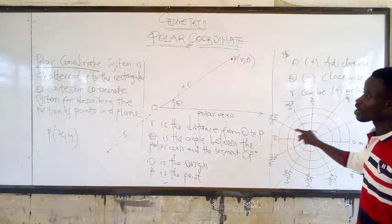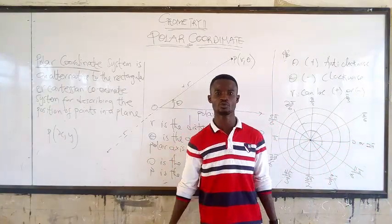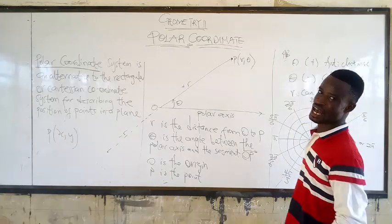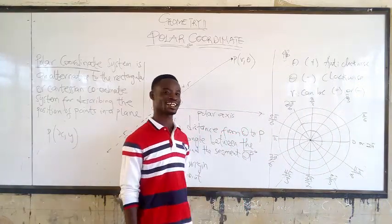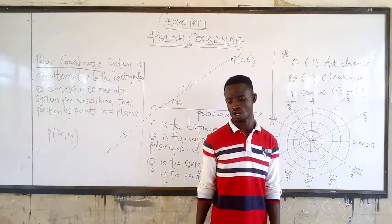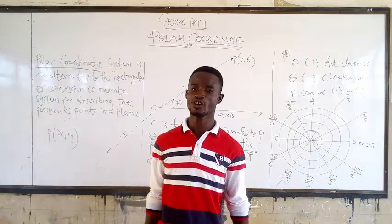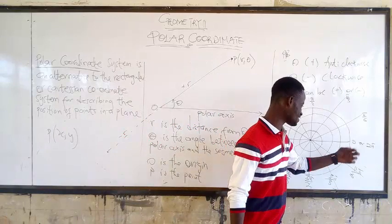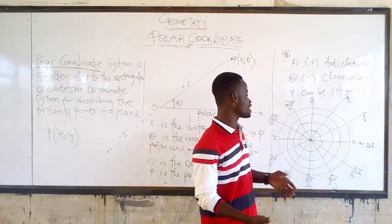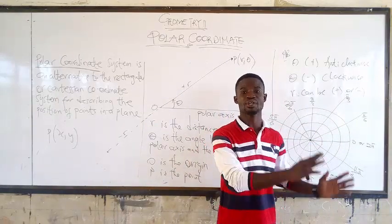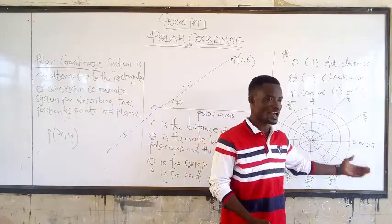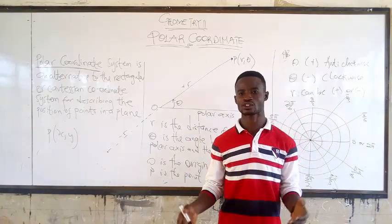If the angle is positive, the point will be here, and its reflection will be negative. So I hope you have your polar graph book. The initial side starts from zero, and the angles are measured in radians — you see pi on the graph, which means it is in radians. It can also be in degrees; it depends on you. I will show you how to convert from radian to degree and from degree to radian.